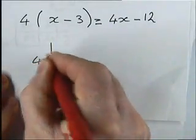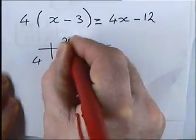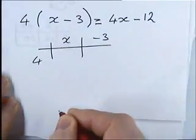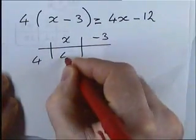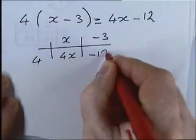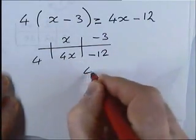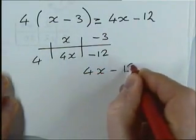The other way of doing it would be to say 4 lots of x minus 3 like that. Now, 4 times by x is 4x and 4 times by negative 3 is negative 12. And if you add those two together, we get 4x minus 12.